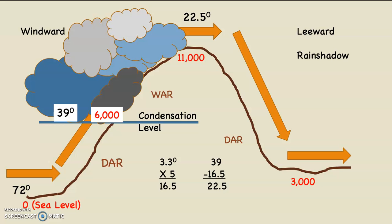It's obviously colder up there. So we take 39, which is what the temperature was at 6,000 feet, minus 16 and a half degrees, equals 22 and a half degrees. Now we know the temperature at the top of the mountain at 11,000 feet is 22 and a half degrees.